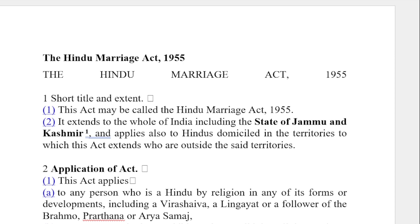Section 1 talks about short title and extent. This act may be called the Hindu Marriage Act 1955. It extends all over India including Jammu and Kashmir, because after the Jammu and Kashmir Reorganization Act,